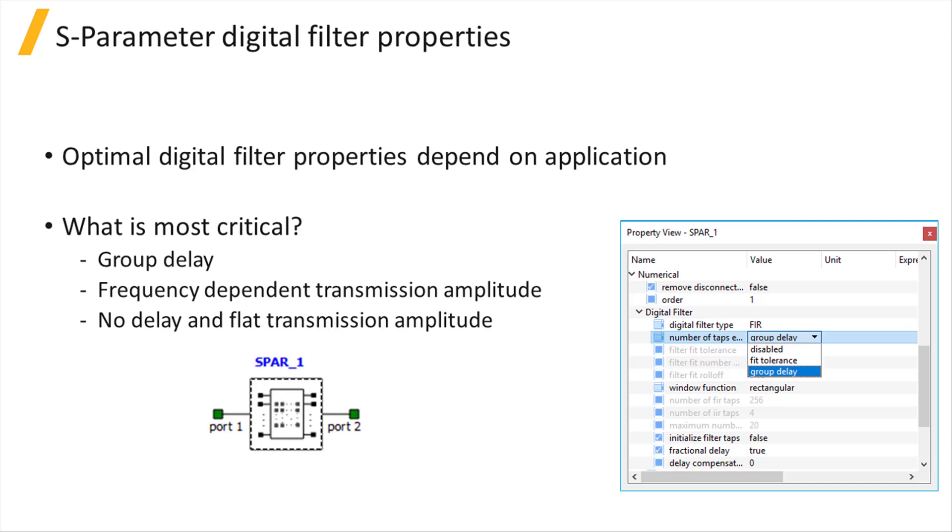S-parameter elements are used for a wide range of applications and play a variety of roles in circuits. The optimal digital filter properties depend on the S-parameter element's role in the circuit. In determining the optimal settings, we must ask ourselves, what is most critical?